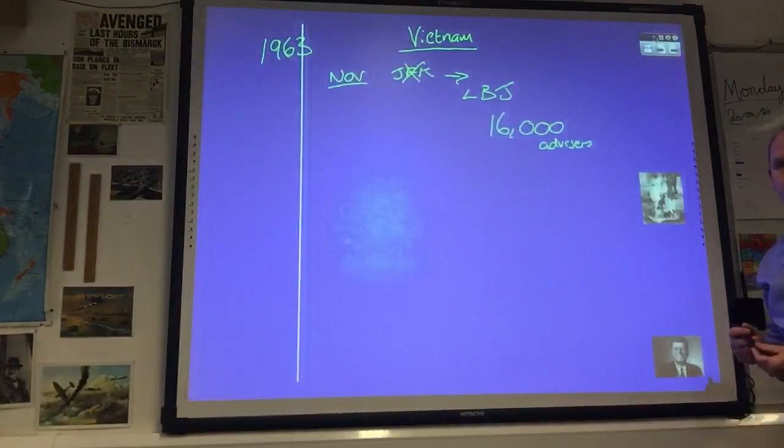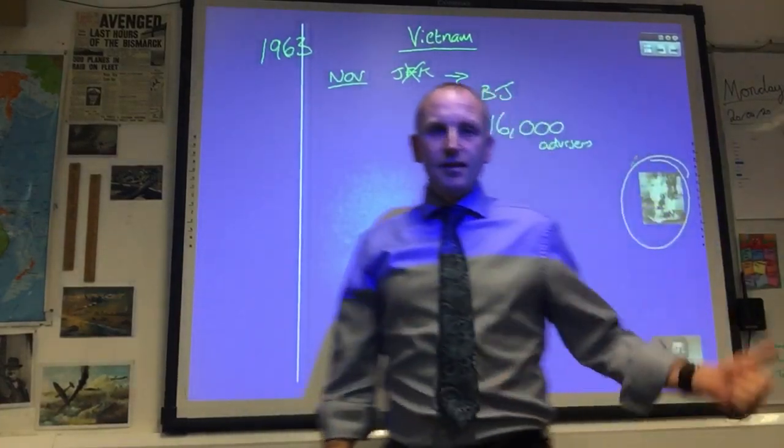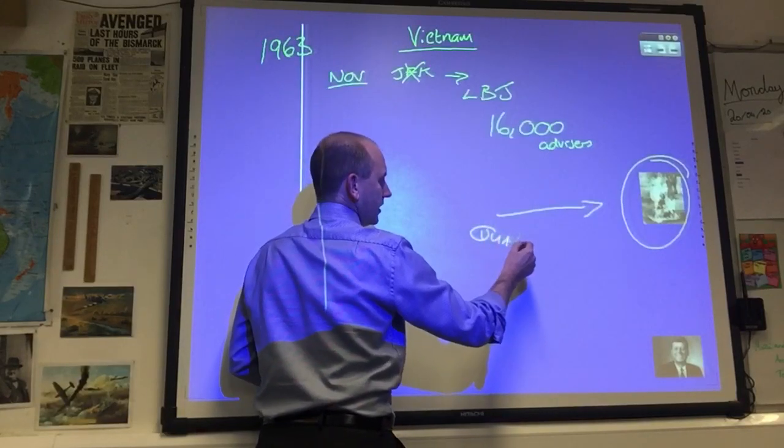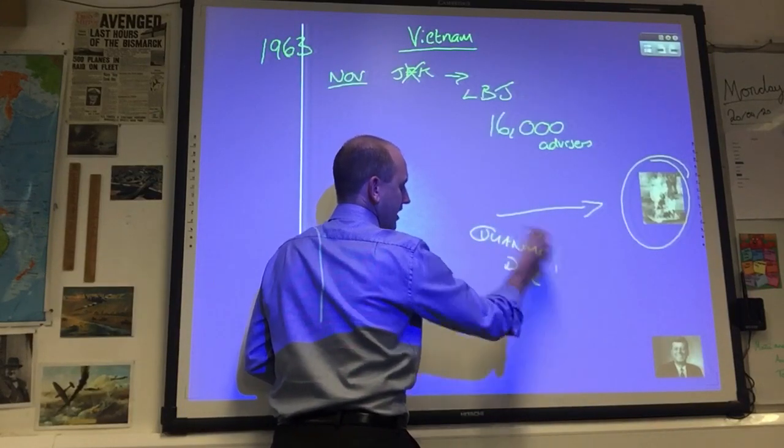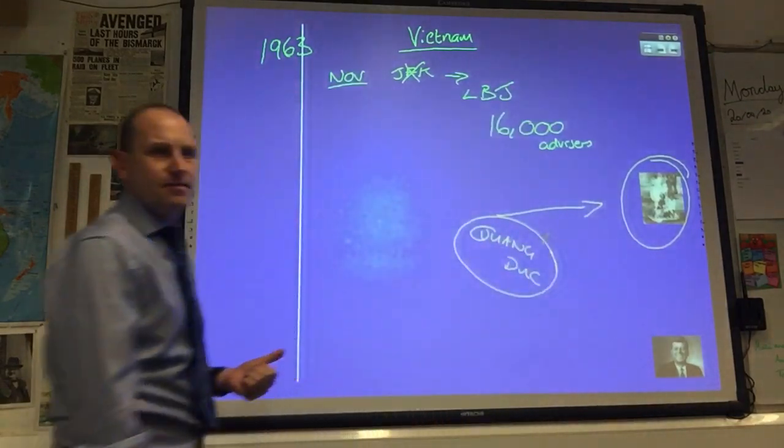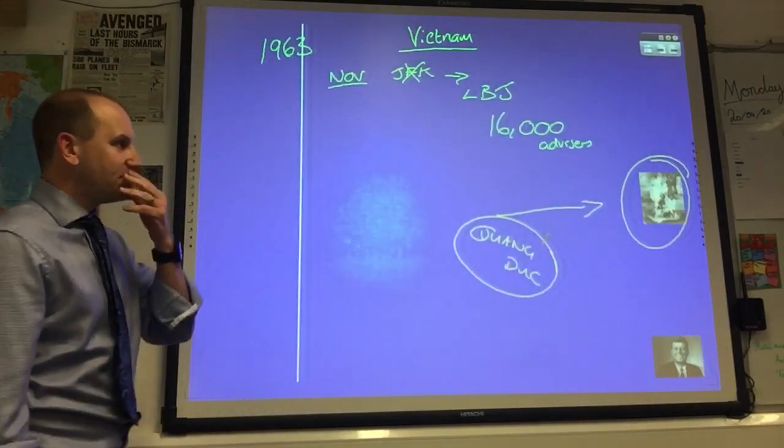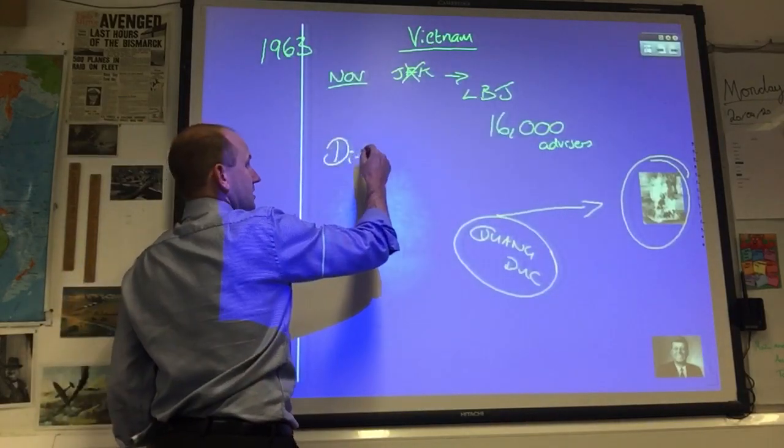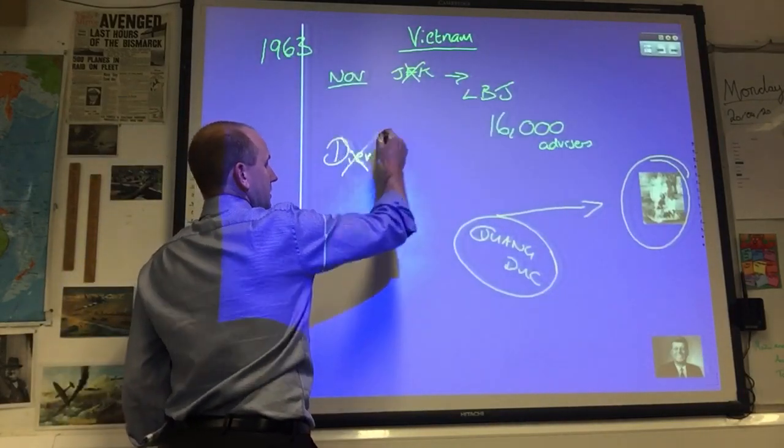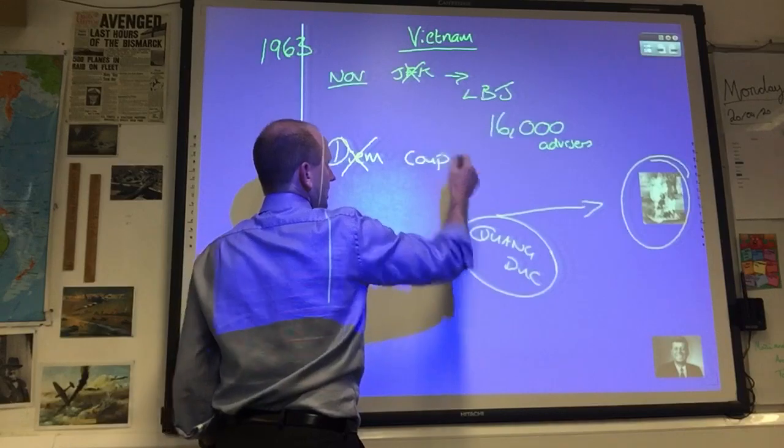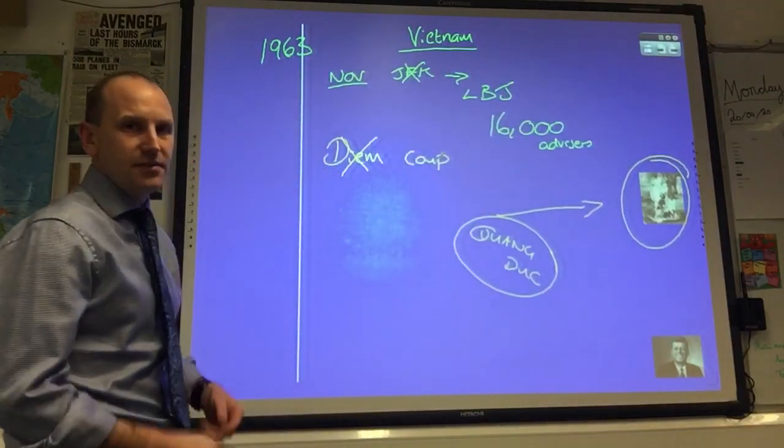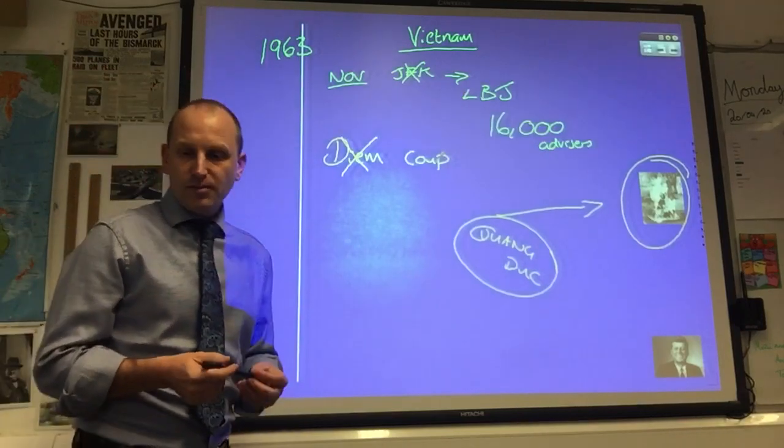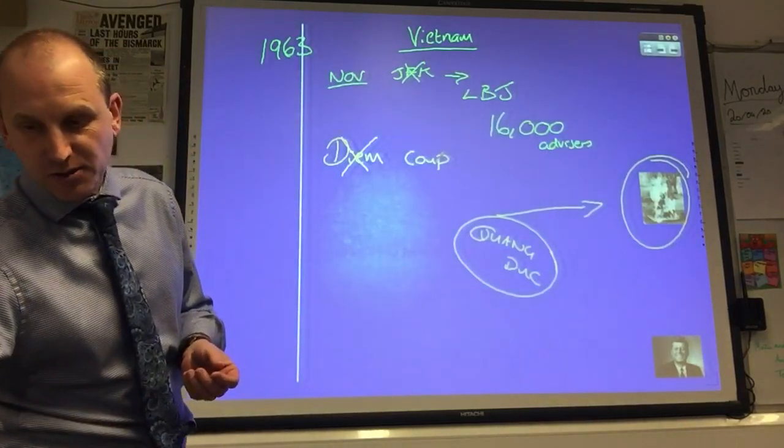If you want a good example of that corruption and unpopularity, there you have over there. Remember Quang Duc, the intersection in Saigon, the Buddhist monk who protested in 1963 about Diem's regime by setting himself on fire. Eventually in November 63, Diem is going to be ousted by a coup, a military coup led by generals. That's the pattern you're going to get in South Vietnam, one leader after another being replaced for being unpopular and corrupt.